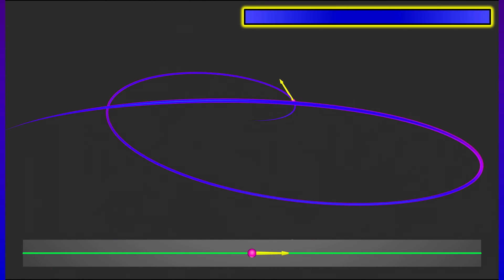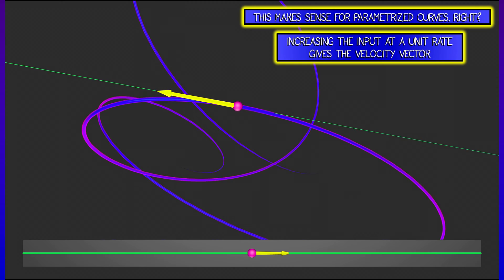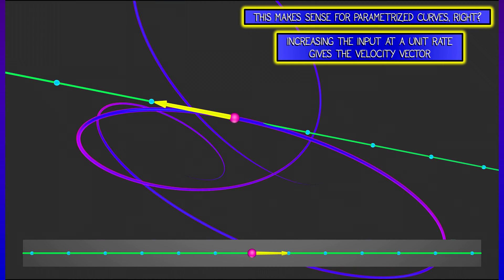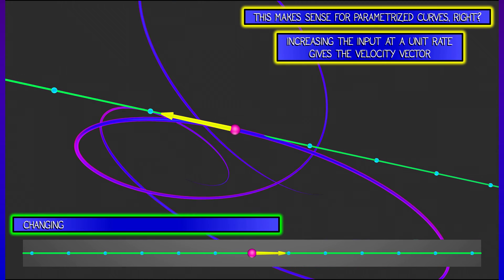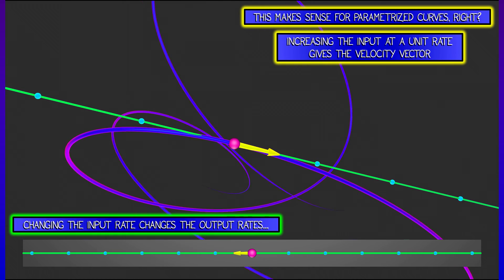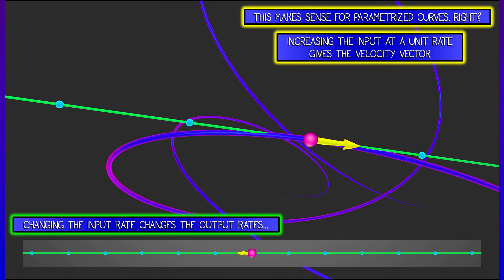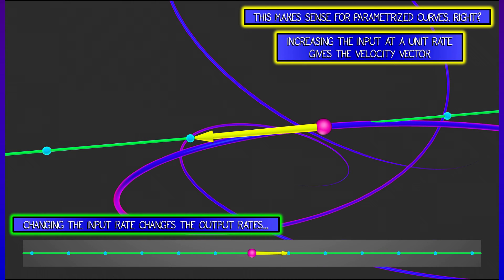Consider a parametrized curve in three-dimensional space. If I look at the derivative of that function, that gives us a vector tangent to the curve, the velocity vector. But I can think of that derivative in terms of a linear transformation by saying, what happens if I change the input at certain rates, if I move forward, if I move backward? Well, that vector captures that via a linear transformation.